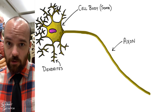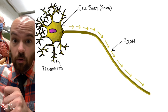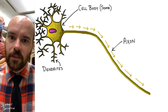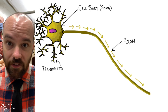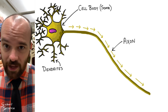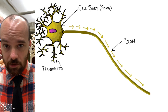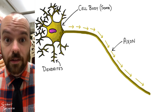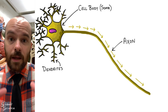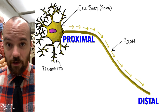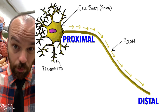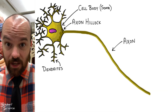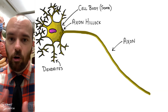One of the appendages sticking out of the cell body is called the axon. The axon sends information away from the neuron to other neurons or muscle cells in the body. You can easily identify it — it's the single, really long appendage sticking out of the cell body. At the very beginning, or proximal part, of that axon is a small bulge we call the axon hillock.